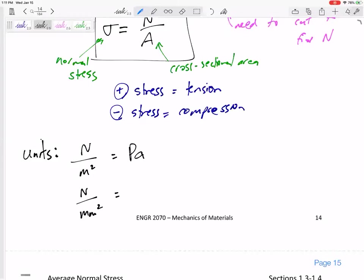Meters to millimeters is off by a factor of a thousand, but we're also squaring it, so it's a factor of 10 to the sixth. It's MPa, megapascal. Let's remember that one. A lot of our stresses are going to be in MPa. A lot of our dimensions we can have in millimeters, so a Newton per millimeter squared is a megapascal.